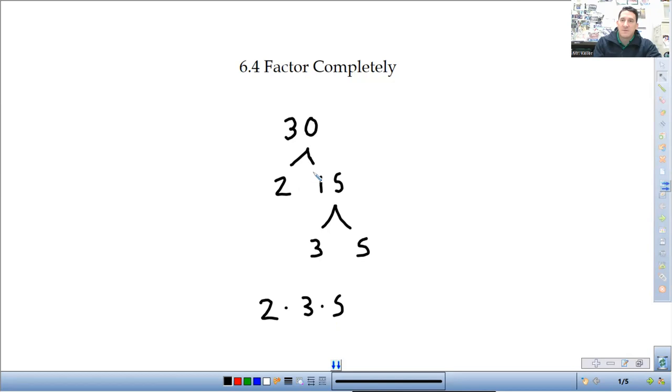The final factors of 30 would be 2 times 3 times 5. So, what we've done in the past is only had one layer of factoring. This one, we're going to have these two layers.